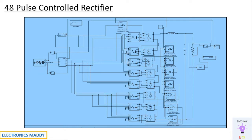A 48-pulse control rectifier can be built in many ways: by combination of 8 six-pulse control rectifiers in this particular fashion, or it can also be built using 4 twelve-pulse control rectifiers, or 2 twenty-four-pulse control rectifiers. But with respect to simulating them in MATLAB, the complication increases if we follow the other methods. Similarly, 36-pulse, 24-pulse, 18-pulse, and 12-pulse control rectifiers are also simulated.